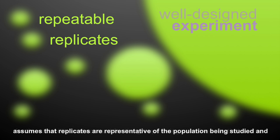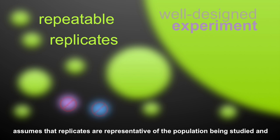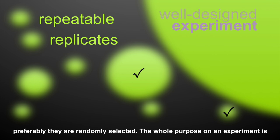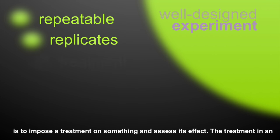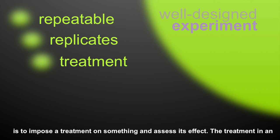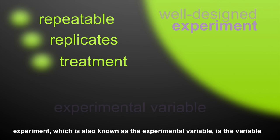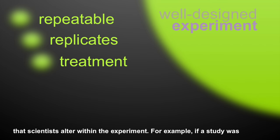Statistics also assume that replicates are representative of the population being studied, and preferably they are randomly selected. The whole purpose of an experiment is to impose a treatment on something and assess its effect. The treatment in an experiment, also known as the experimental variable, is the variable that scientists alter within the experiment.